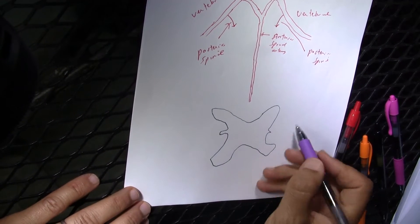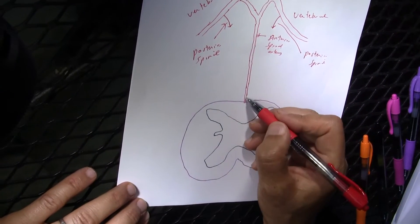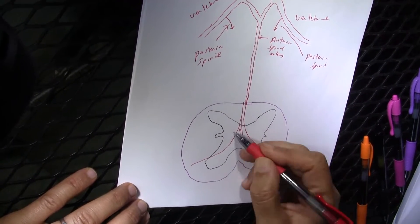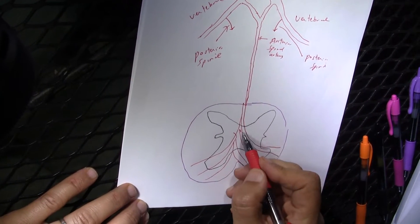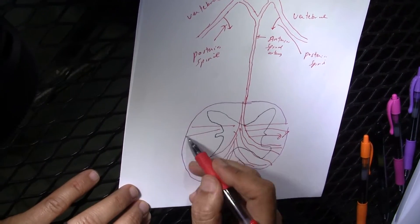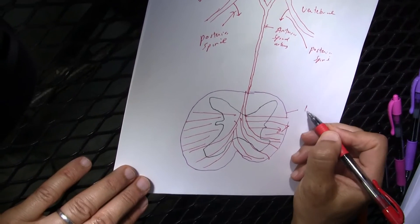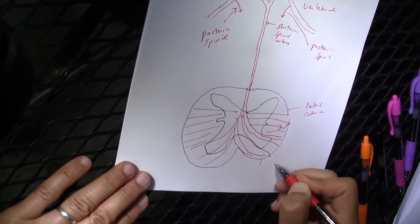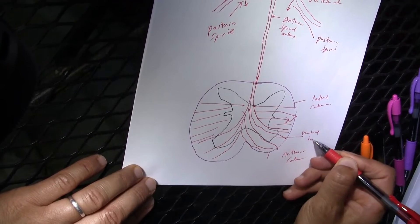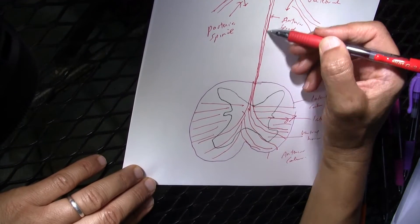Here is the spinal cord. You will see that this anterior spinal artery supplies the anterior two-thirds of the spinal cord. It covers the lateral horn cells, ventral horn cells, lateral column, and anterior column — so lateral column, anterior column, ventral horn, lateral horn — all of them supplied by the anterior spinal artery.